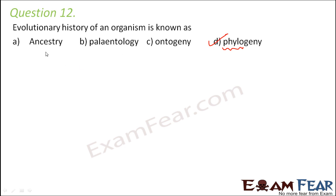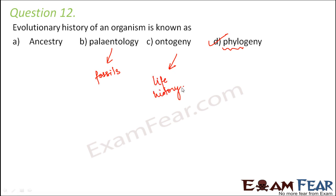Besides that, you have options like ancestry. Ancestry is something which belongs to your ancestors and then to their ancestors and so on. When you talk about paleontology, it talks about the study of fossils. Ontogeny is the study of life history of organisms. But when you talk about evolutionary history, that means how that entire race evolved.